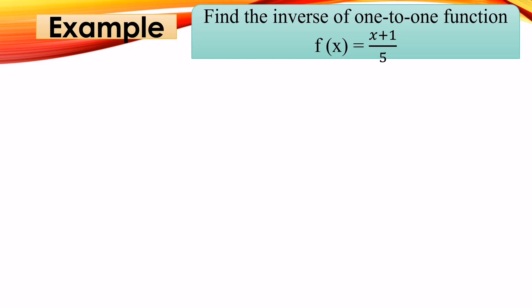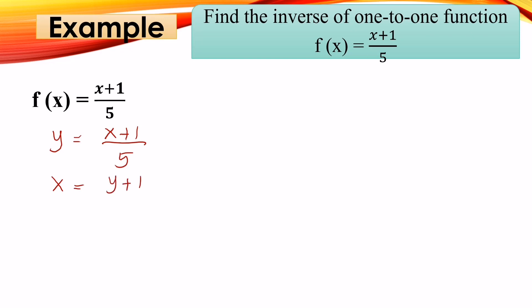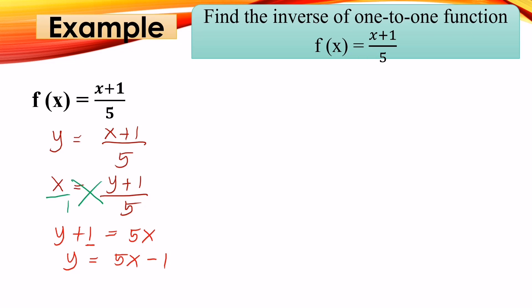Another example: f(x) = (x + 1)/5. Change f(x) to y = (x + 1)/5. Interchange to get x = (y + 1)/5. Apply cross multiplication: 1 × (y + 1) = 5x, so y + 1 = 5x. Combine: y = 5x - 1. Therefore the inverse function of f(x) is f⁻¹(x) = 5x - 1.